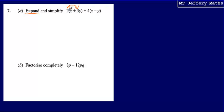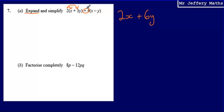So I'm going to do 2 multiplied by x and 2 multiplied by 3y. That gives me 2x — 2 multiplied by x gives 2x — and 2 multiplied by 3y gives me 6y. Then I'm going to do exactly the same thing for the second bracket, taking the term on the outside, which is positive 4, and multiplying that by both terms inside the bracket.